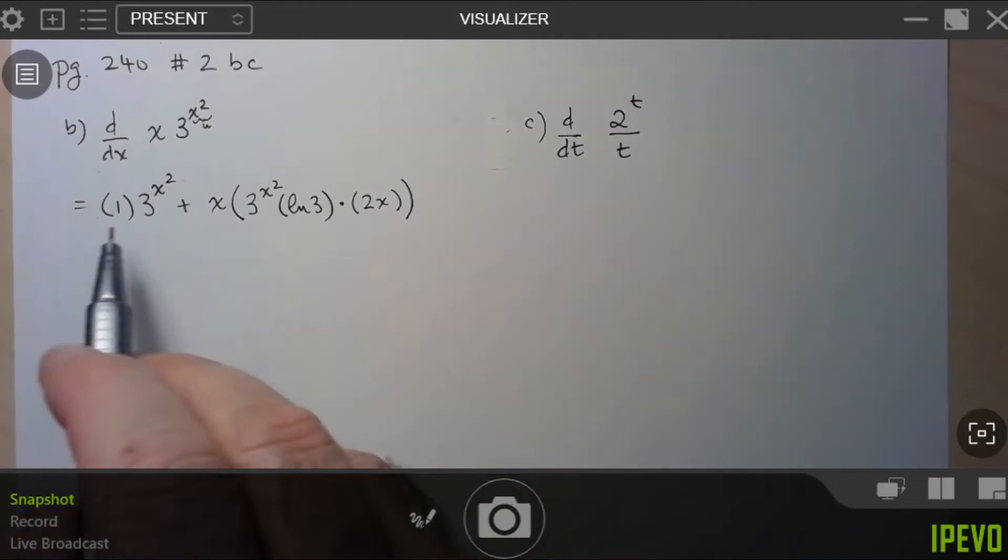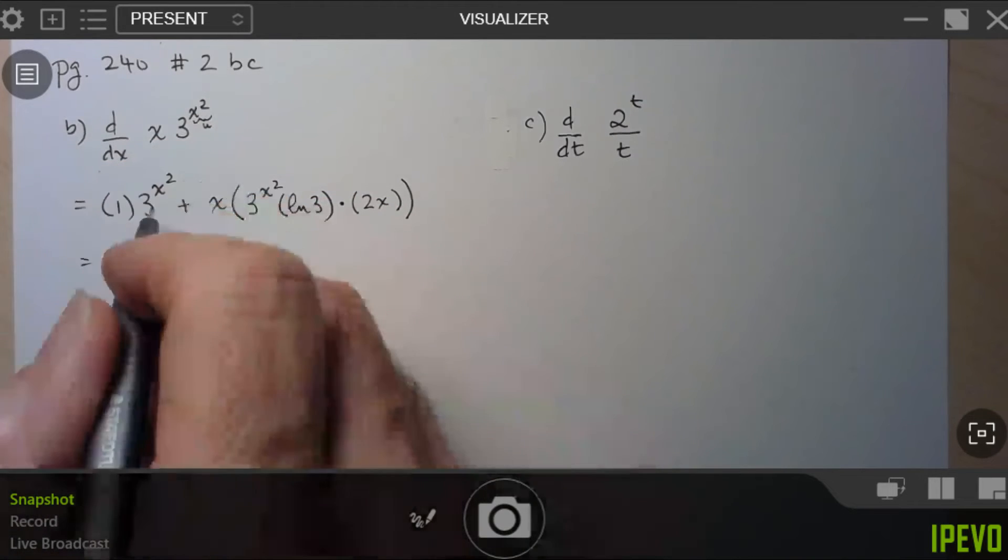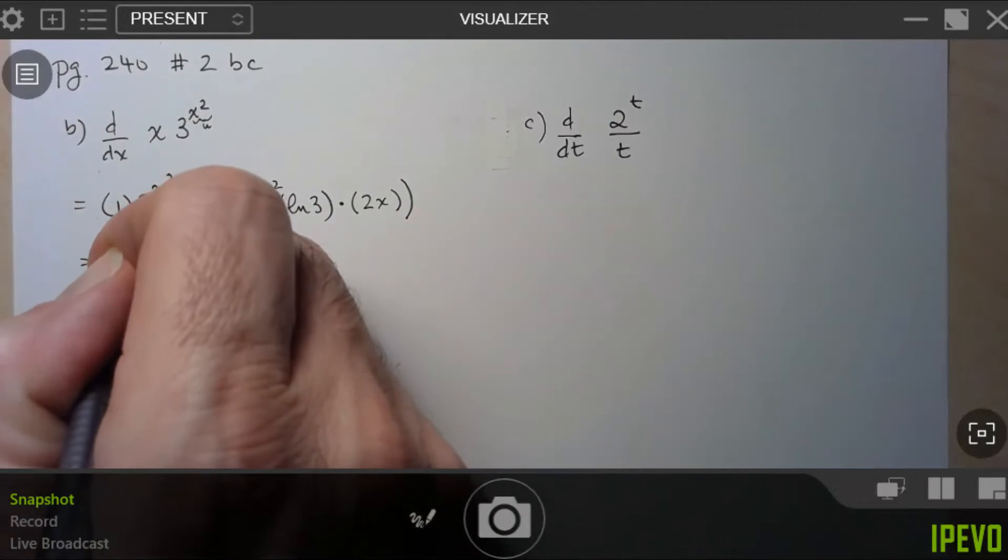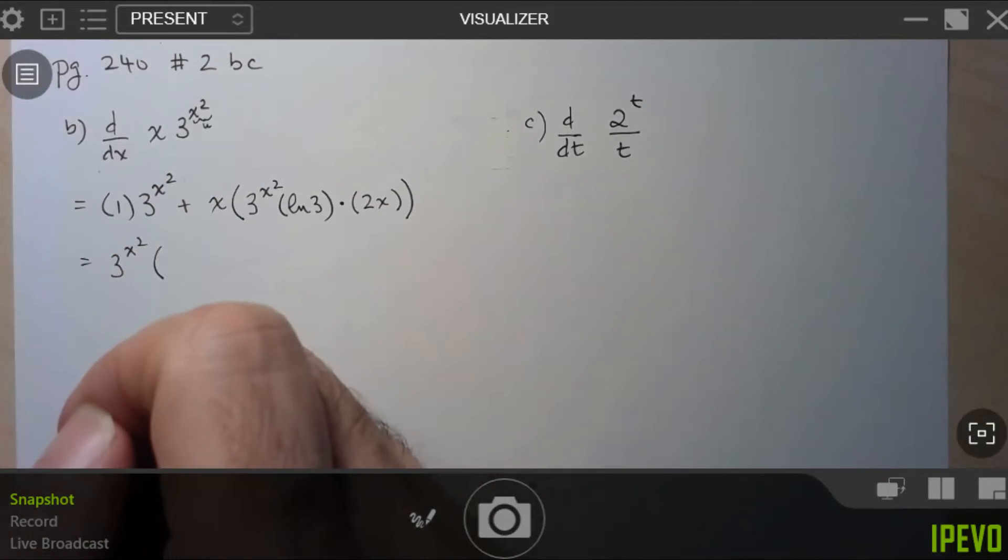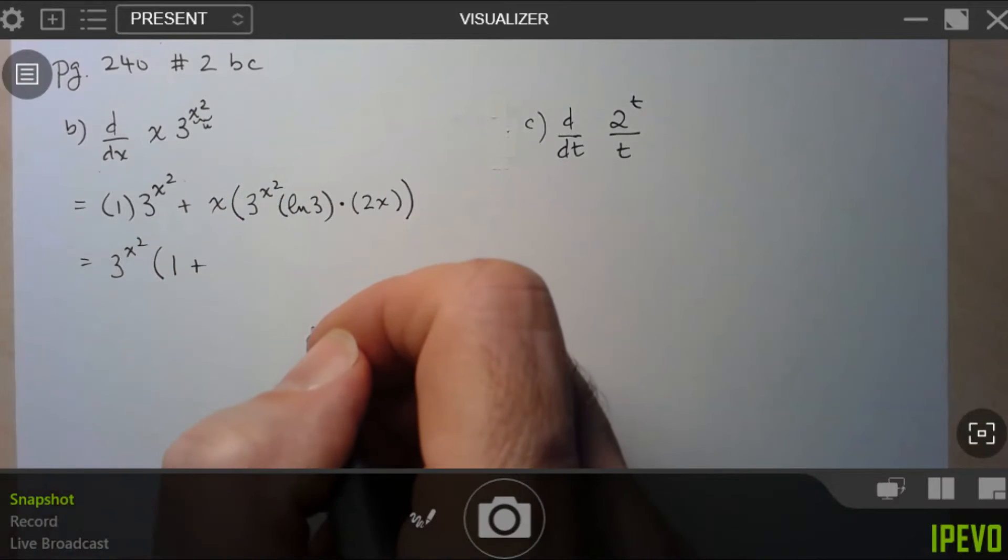So you could clean this up, but we'll say for this one here, we don't need to simplify. Although if you did, you'd probably just want to, actually, let's simplify. I would factor out the 3 to the x squared, which is common to both. And then let's see what we're left with. We're left with 1 plus...